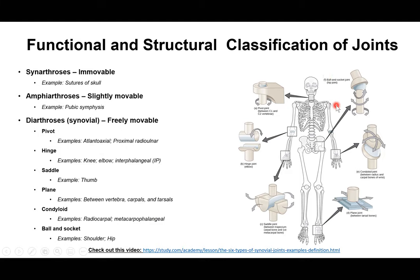Finally, ball-and-socket joints — the shoulder and hip joints — allow all motions: flexion, extension, abduction, adduction, circumduction, and rotation. These are the most mobile joint type. A video link is provided for further review of the six types of synovial joints.